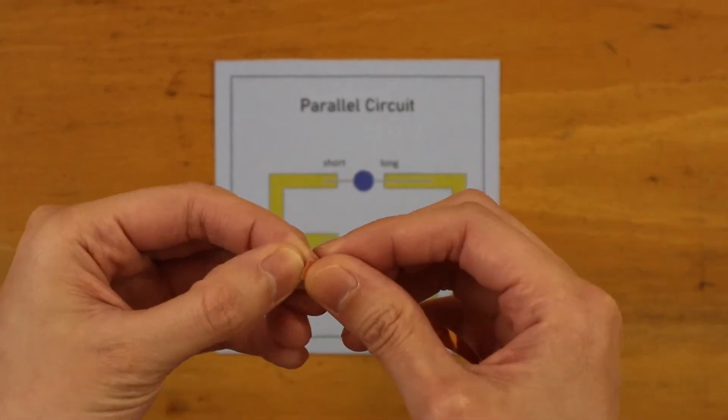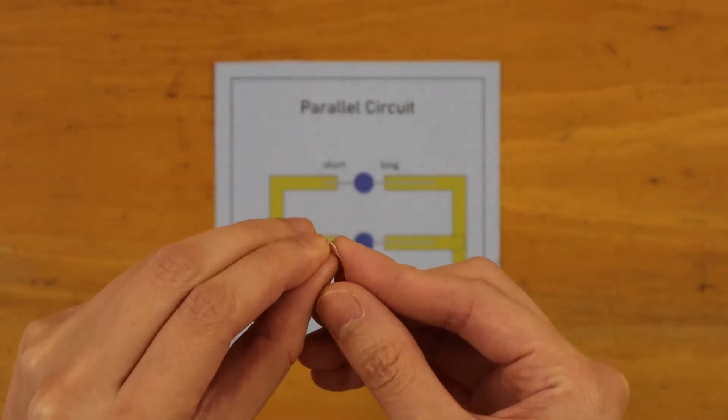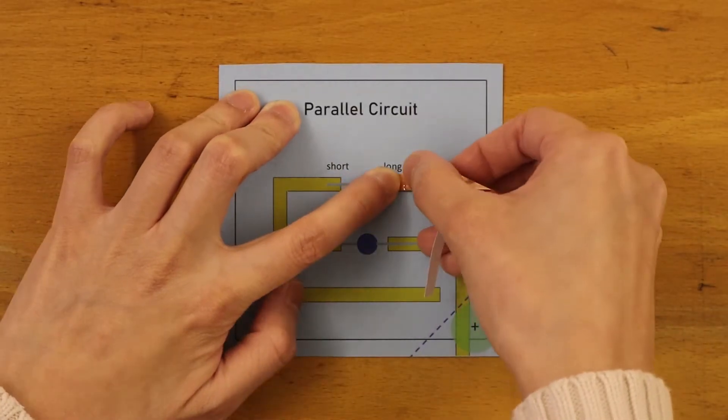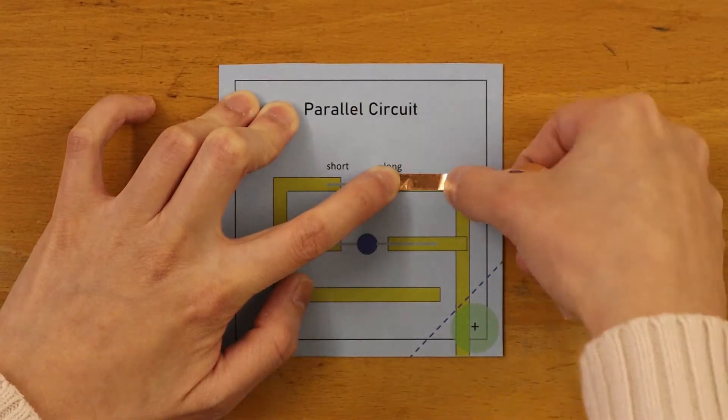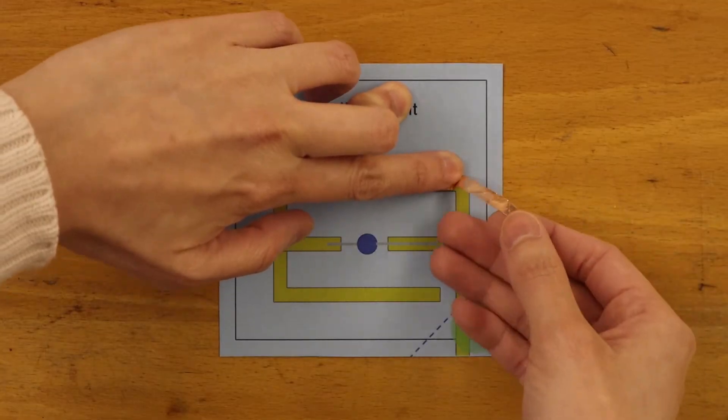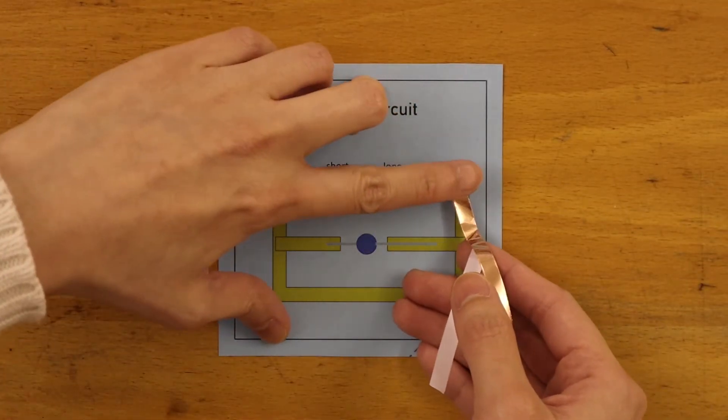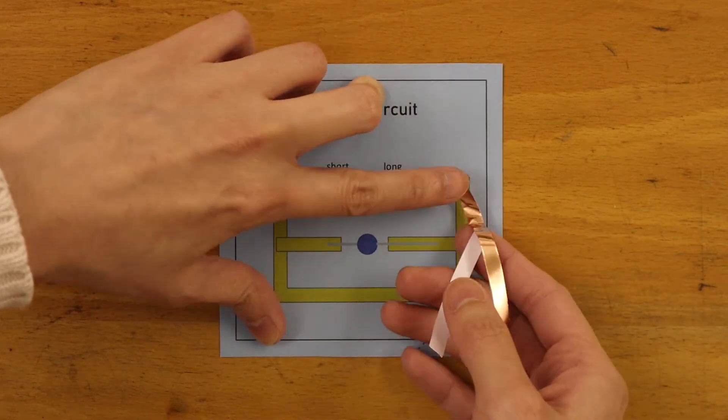Peel back the copper tape to expose the sticky side. When turning the tape around the corner, be sure not to tear it. Try to fold it down so that we can keep the tape continuous.